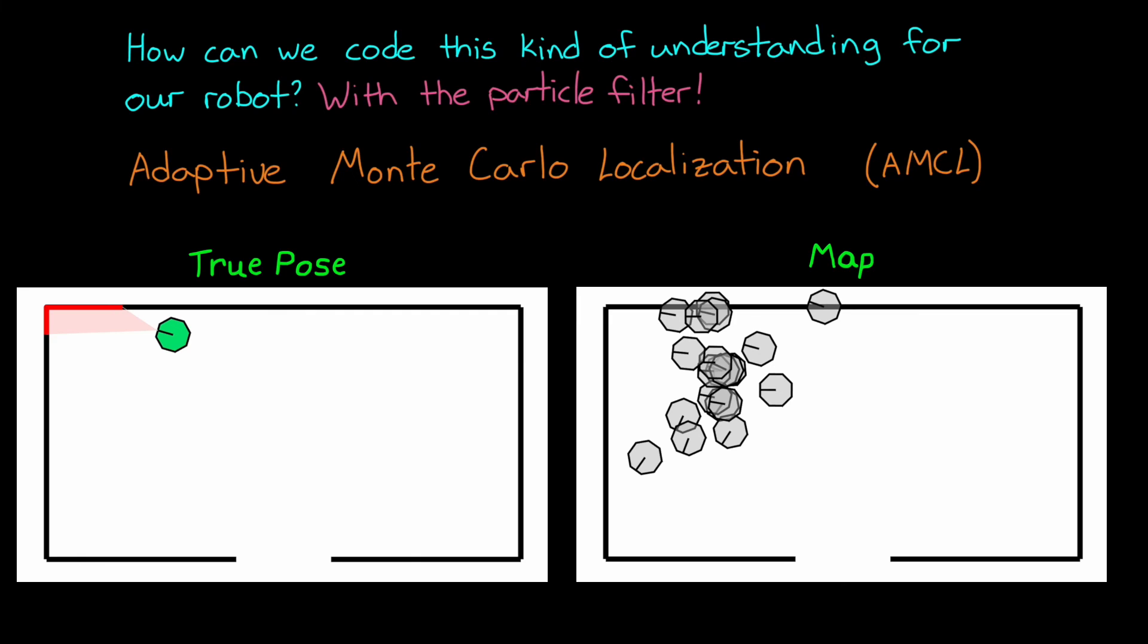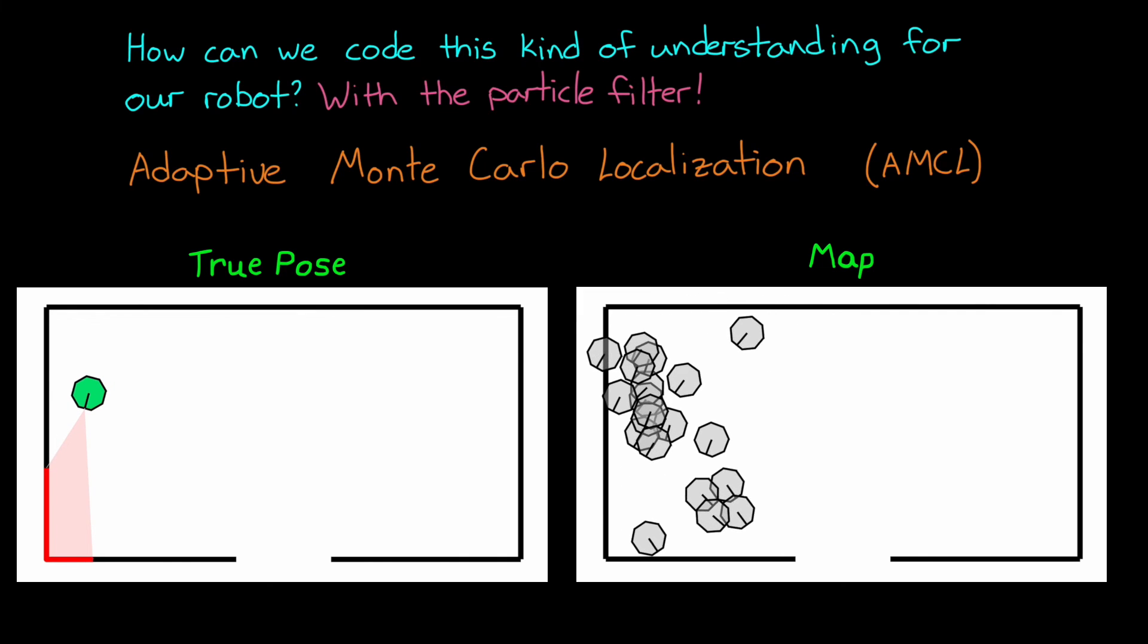Now each generation is exactly the same as before. We model the motion of the robot using odometry, we apply that motion to the particles, take another LiDAR measurement, and determine which particles are most likely. Then we resample based on this new probability distribution and start again. And this iterative process is how we can use particles to converge over time on the actual pose of the robot, even in a room that is as featureless as this rectangle.